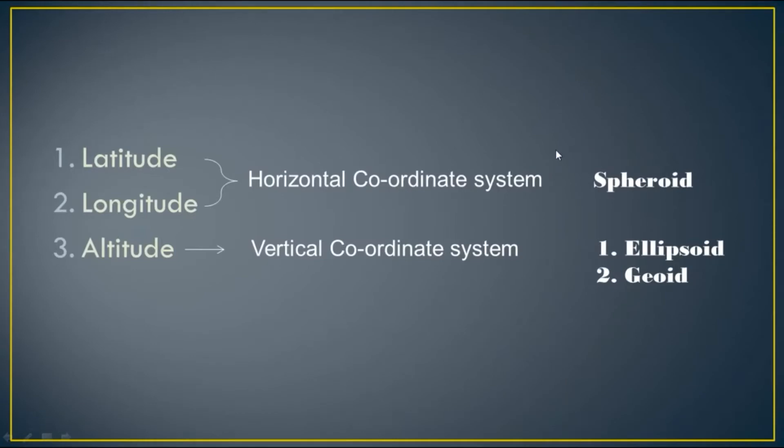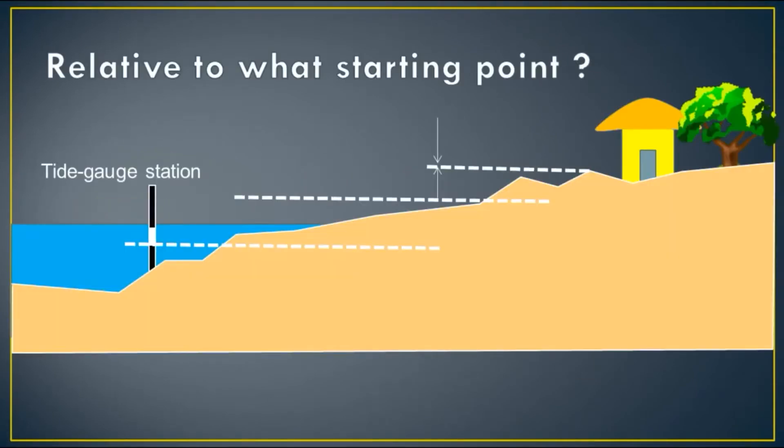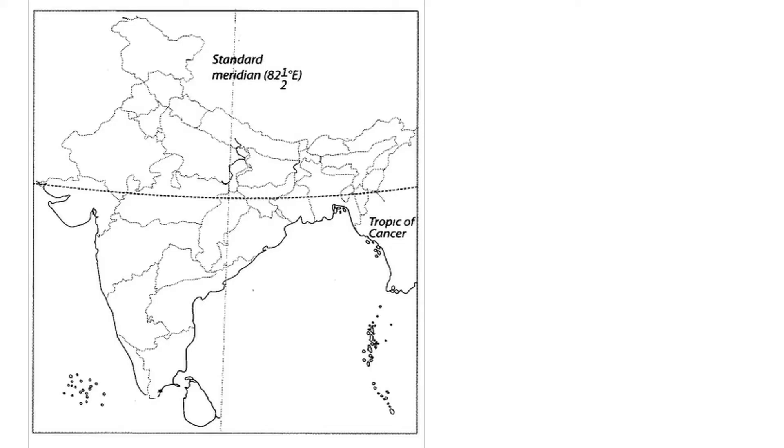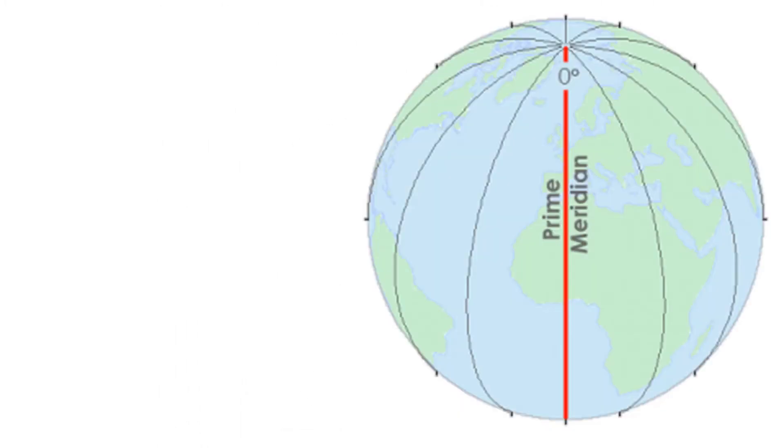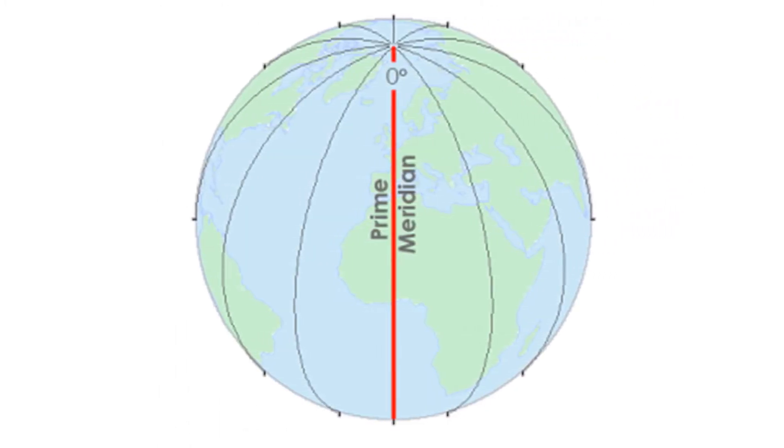To understand this, we have to think the earth is an ellipsoid or geoid. In mathematics, a reference point is very essential to quantify anything. Similarly, during the measurement of latitude, the central meridian is an imaginary reference line which serves as the starting point for measuring longitude of earth.